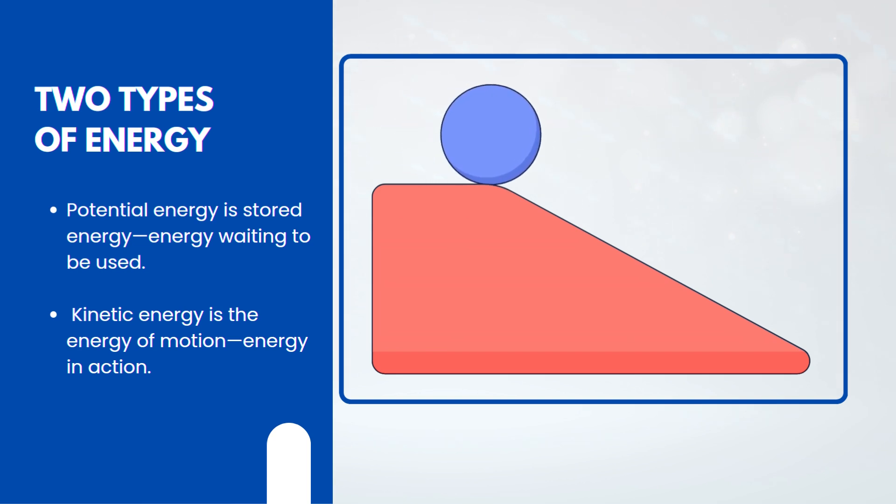Imagine a ball resting at the top of an inclined plane. At the top, it has potential energy because of its position. Once it begins to roll down, that potential energy changes into kinetic energy as it moves. Let's start by exploring kinetic energy a little deeper.